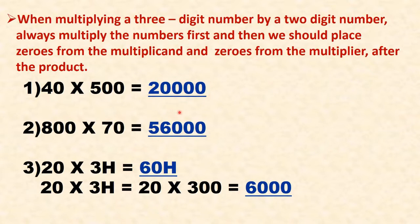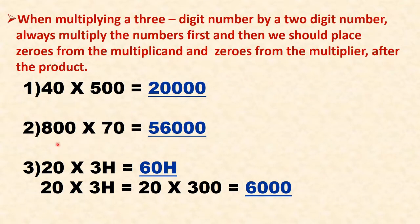Next example: 800 multiplied by 70. The multiplicand has two zeros and the multiplier has one zero. First, multiply 8 by 7 to get 56. Then take the two zeros from 800 and the one zero from 70 and place them next to 56, so the answer is 56,000.